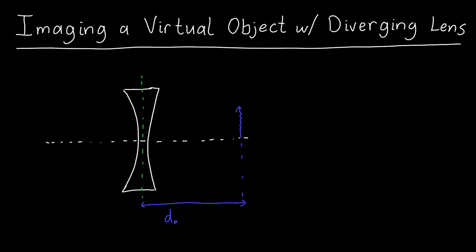In this video we're going to learn how to ray trace and find the image of a virtual object with a diverging lens. In this case our object distance is going to be minus 40 centimeters, and the focal length of our lens is minus 20 centimeters, so this is a diverging lens meaning it has a negative focal length.